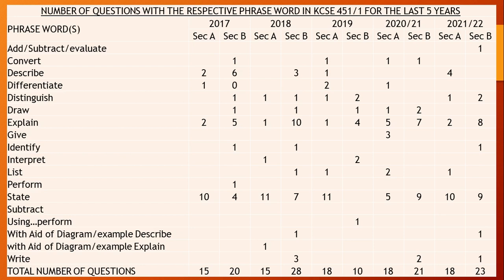For example, 'add/subtract' was tested in section B in 2021 and 2022. 'Convert 4.374' has been tested in 2017, 2019, and 2021. Keywords include: describe, differentiate, distinguish, draw, explain, give, identify, interpret, list, perform, state, subtract, and write — with or without the aid of a diagram or example. This can help you look at the keywords used to frame questions in paper 1.